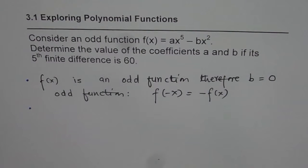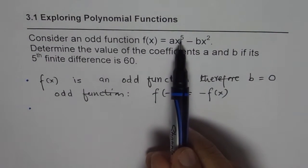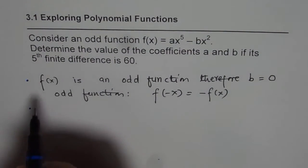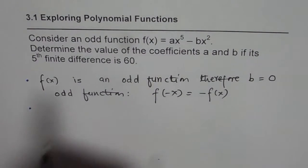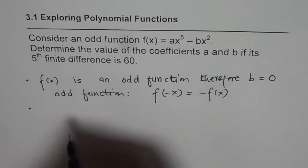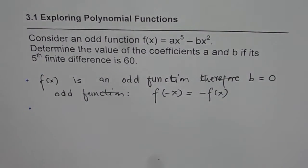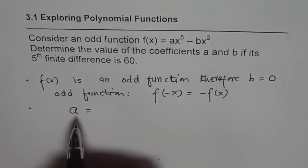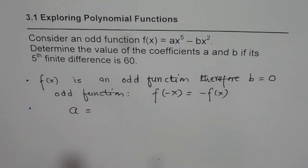Now the second part is, it is a degree 5 polynomial, therefore the 5th finite difference will be constant. Now you are given 5th finite difference is 60. What is a? We have to find the relation between a, the leading coefficient, and the finite difference.